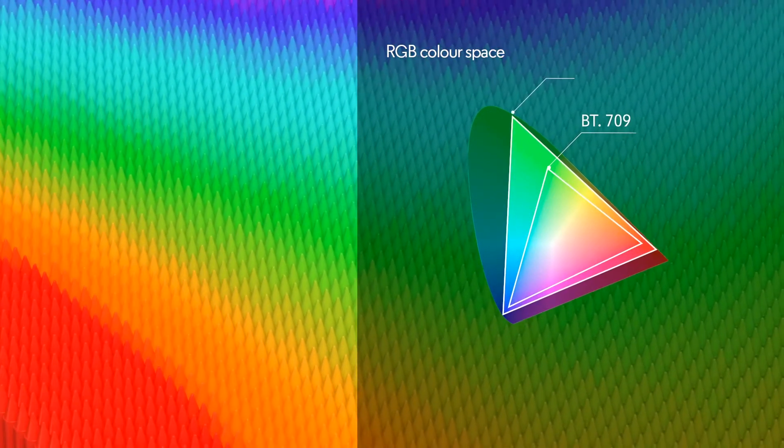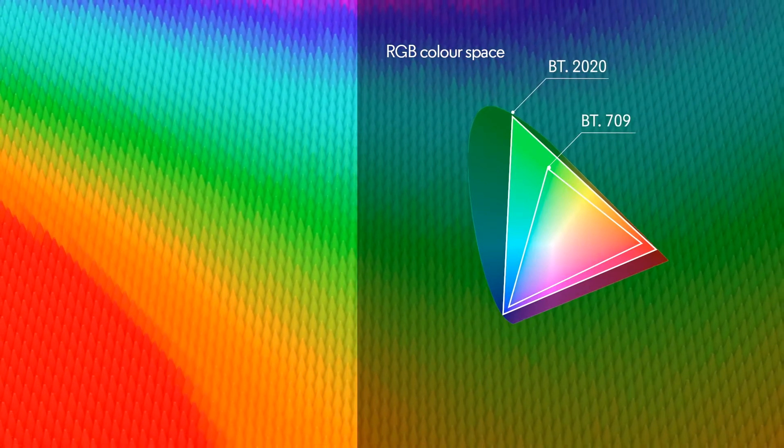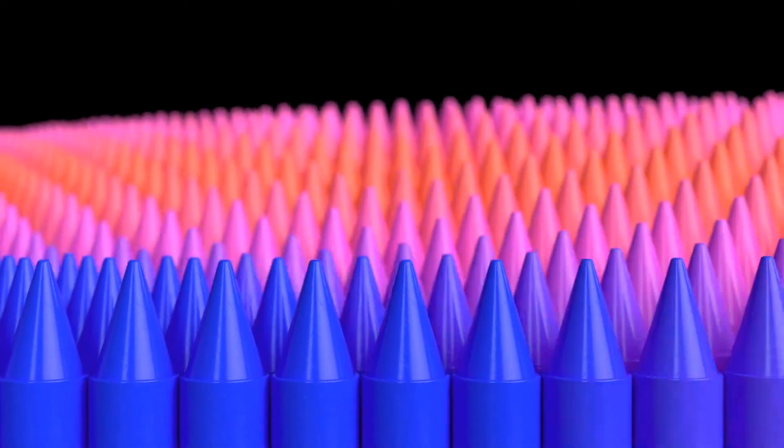But with an EIZO ColorEdge you get more. BT2020, often referred to as REC2020, the designated colour space for ultra-high definition.